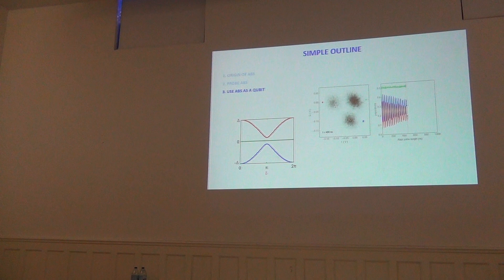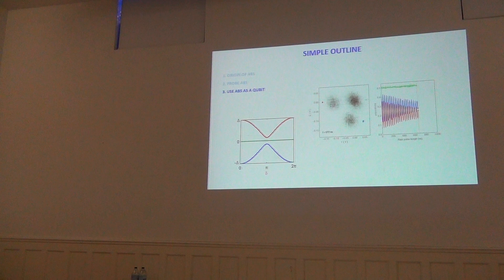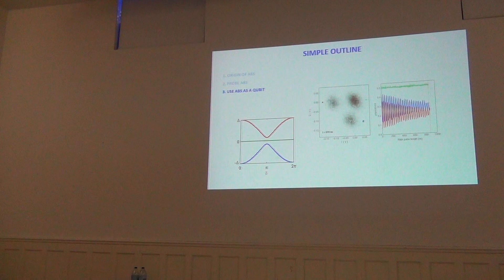Today I will show how we can use these fermionic states to make a qubit or two-level system. This two-level system is different from what you have heard about superconducting qubits, because it is not based on macroscopic degrees of freedom — the phase and charge in a superconducting resonator — but on microscopic degrees of freedom, which are these fermionic states in the weak link.